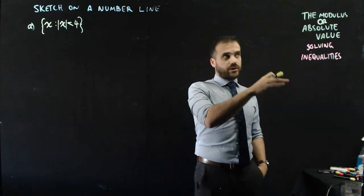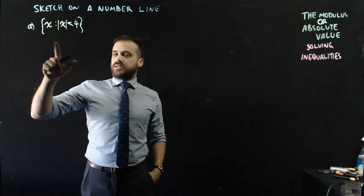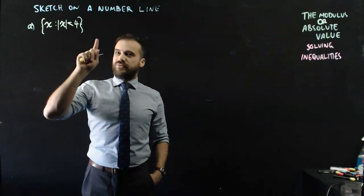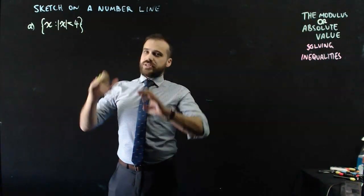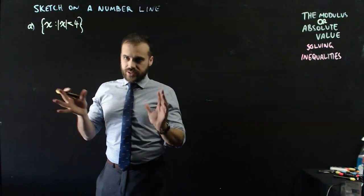This time we're going to be solving inequalities using the absolute value. Here's an example: x is in the set, x is less than 4. We're going to try to sketch that on a number line. Let's just stop for a minute and consider what that means.